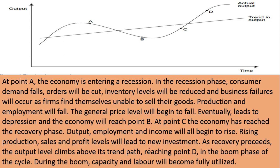Look at this diagram. The business cycle goes up, up, up, reaches the top, then comes down, down, down, reaches the bottom level, and then slowly and gradually goes up again. There are four points: A, B, C, and D. The x-axis measures time and the y-axis measures output. As time proceeds, output sometimes increases and sometimes decreases.